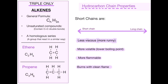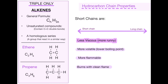Hydrocarbon chain properties: short chains are more desirable in real-life scenarios. They are more viscous, meaning less runny. They are more volatile, which means they have a lower boiling point, so it takes less energy to heat them up or change their state. They are more flammable — again, less energy — and they burn with a clean flame, so they are more sustainable in an industrial setting. All of these properties are basically the opposite with a long chain.